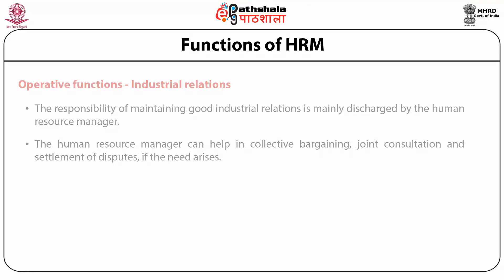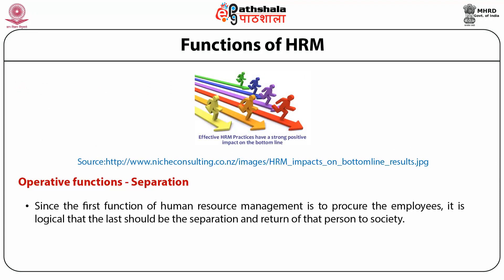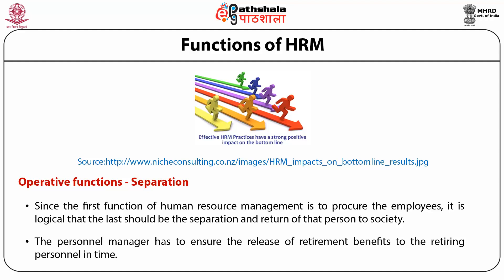Operative function — Separation: Since the first function of HRM is to procure employees, it is logical that the last should be the separation and return of that person to society. Most people do not die on the job. The organization is responsible for meeting certain requirements of due process in separation, as well as assuring that the returned person is in as good shape as possible. The personnel manager has to ensure the release of retirement benefits to the retiring person in time.